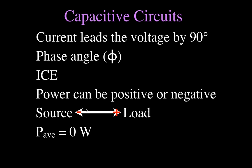When we add all those up, we get that the average power is zero. So there you go — that's AC power for purely capacitive circuits.